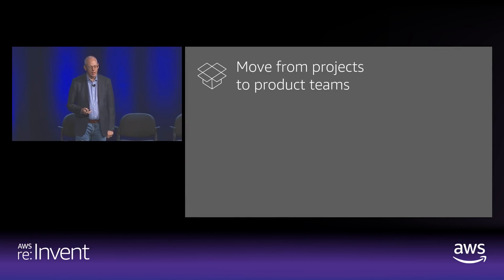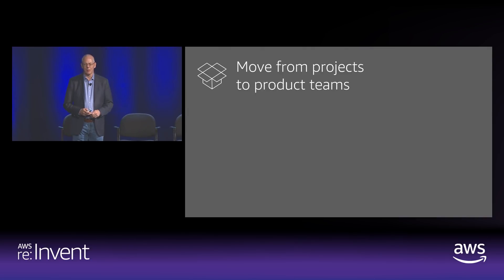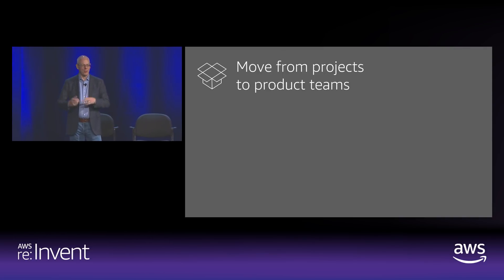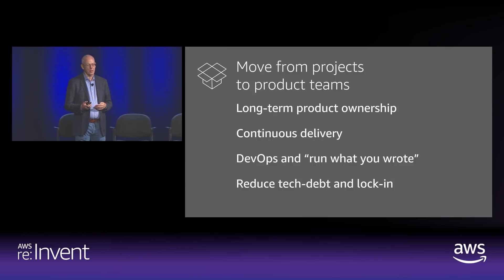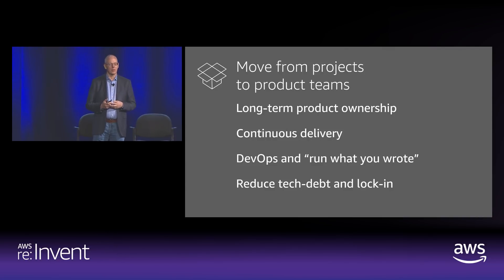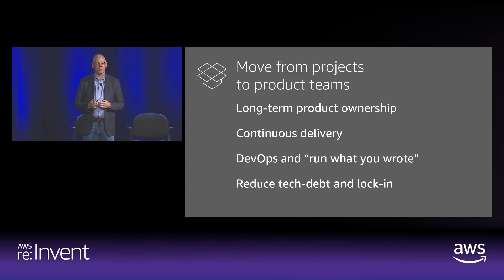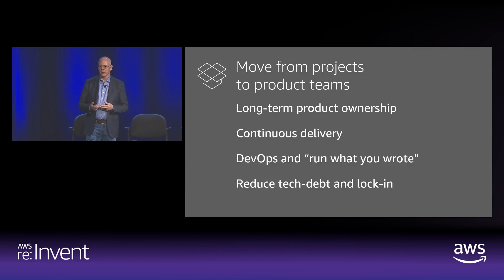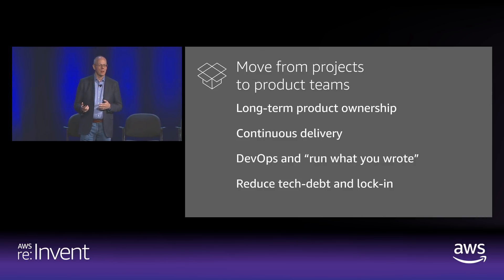A lot of organizations have projects — historically IT has been run that way: form a team, put them on a project, spend nine months upgrading SAP, and then at the end everyone runs away and wants to work on something different. When you move to product teams, you get long-term product ownership. That team is going to live with this thing — making your ERP system slightly better every day through continuous delivery. That changes the incentives: if I'm going to live with the long-term decisions of this system, I'll behave differently than if I get to work on a different project next year. That sense of ownership matters.